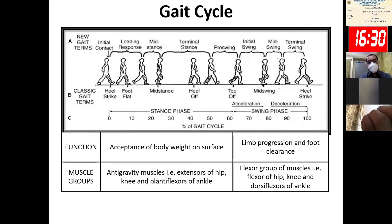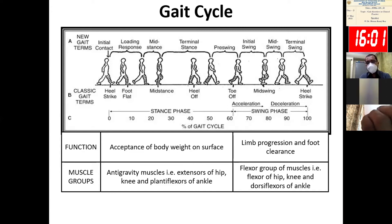A gait cycle starts with one heel strike and ends with the next heel strike of that same side. There are two phases in the gait cycle: one is the stance phase, when there is acceptance of body weight on the surface, and the other is the swing phase, when there is limb progression and foot clearance. The stance phase comprises about 60 percent of the gait cycle; the main muscles involved are antigravity muscles — the extensors of hip, knee, and plantarflexors of ankle. During the swing phase, the main muscles are flexors of hip, knee, and dorsiflexors of the ankle.